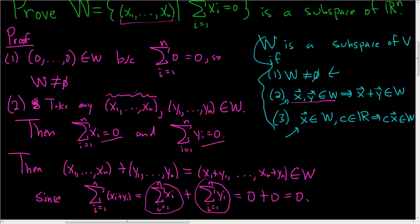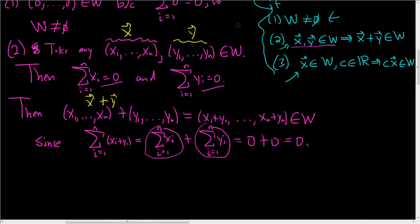This here, let me use a different color. This was our X, and this here, this was our Y. So we took any X and Y, and then we looked at X plus Y, and we showed it was in W because the sum of the components was zero. That's exactly what it means to be in W, right? A vector is in W if the sum of the components is zero.